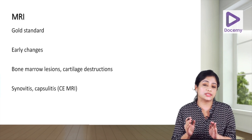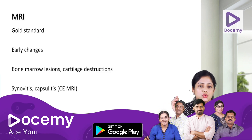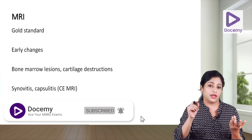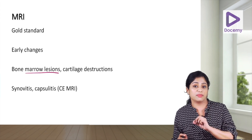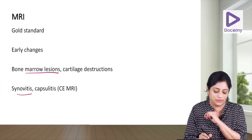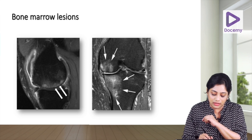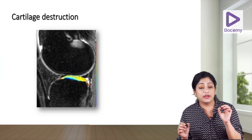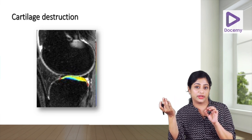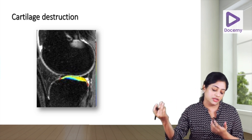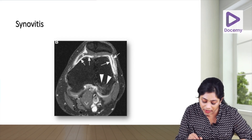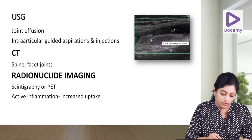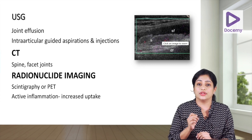MRI is the gold standard for the diagnosis of osteoarthritis because it shows early changes — particularly bone marrow edema, seen as bone marrow lesions or BMLs. MRI is also very good at demonstrating synovitis and capsulitis. Juxtaarticular bone marrow edema seen as BMLs is well-demonstrated, and advanced MRI techniques can quantify cartilage destruction and assess disease progression. Synovitis is demonstrated as a worm-like area of thickened inflamed synovium enhancing on contrast-enhanced MRI.